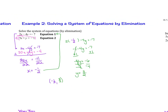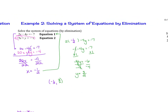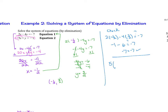We can plug back in to check. For equation 1: 2 times negative 1 half minus 4 times 3 halves — does that equal negative 7? That's negative 1 minus 6, which gives negative 7. Yes, negative 7 equals negative 7. For equation 2: 5 times negative 1 half plus 3 halves equals negative 1. That's negative 5 halves plus 3 halves equals negative 2 over 2, which equals negative 1. Yes, negative 1 equals negative 1. So this is true.